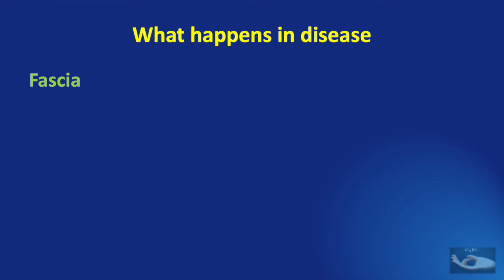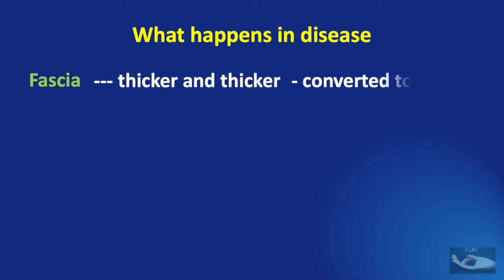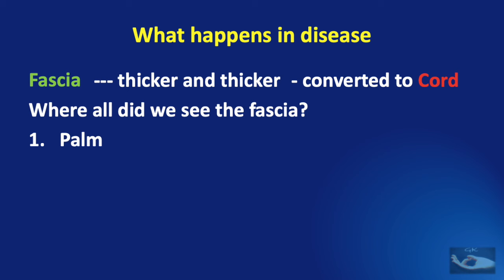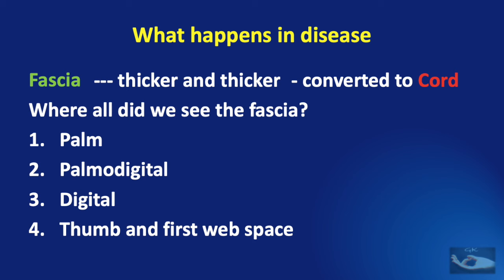When the fascia we have seen becomes diseased, it becomes thicker and thicker, and ultimately gets converted to what are known as cords. Hence, fascia is physiological; the cords are thicker and pathological. They become shorter and hence cause contractures. We saw this fascia in the palm, the palmo-digital area, the fingers, and at the base of the thumb and thumb web — are all these fascia converted to cords? Yes, we shall see how.